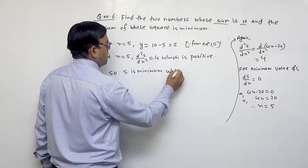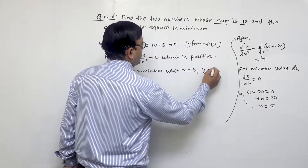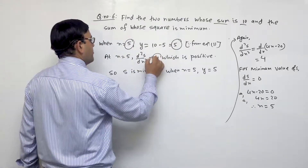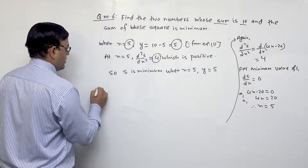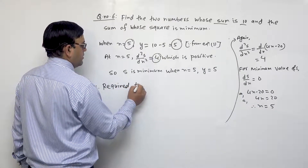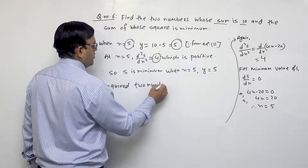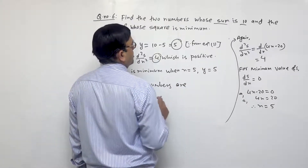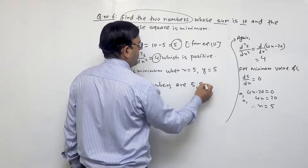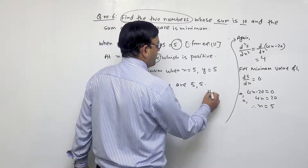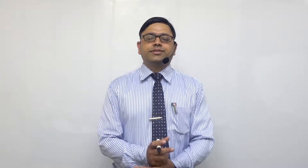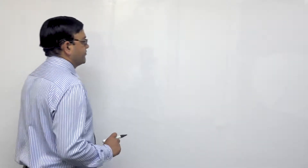Therefore S is minimum when x = 5 and y = 5. Hence the required two numbers are 5 and 5. In this way we completed this exercise.